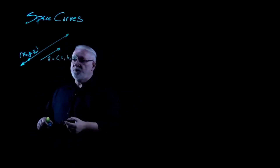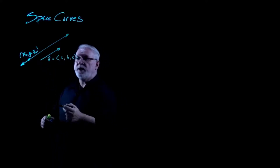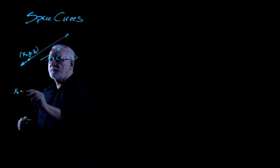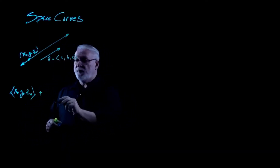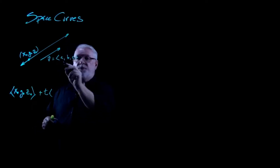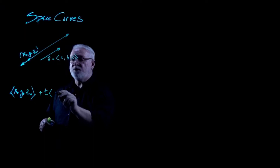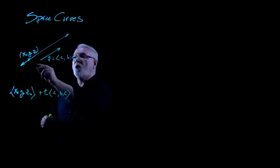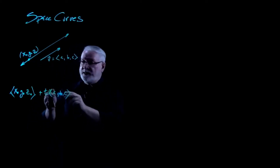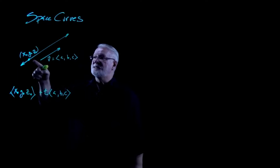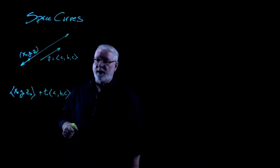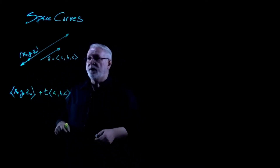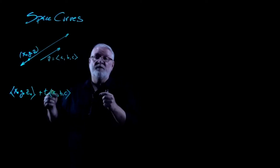That gave us the vector form of the equation for a line, which was a vector that went from the origin to the point x0, y0, z0. And then to that, we added the vector v times a parameter t. The parameter t's purpose was to multiply these components of vector v so that we could form all the points along the line — extending v, contracting it, or even flipping it with negative t's to generate every point on the line.